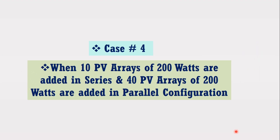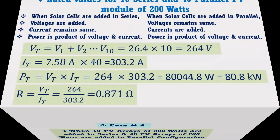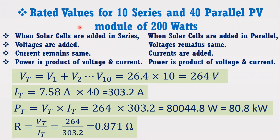Now let's consider the last case for a large solar system in which 10 solar PV arrays are added in series and 40 solar PV arrays are added in parallel. Both configurations are combined. Due to the series configuration, voltages are added, resulting in a total voltage of 264V. Due to the parallel configuration, currents are added, resulting in a total current of 303.2A. Therefore, the total power will become 80.8 kW.